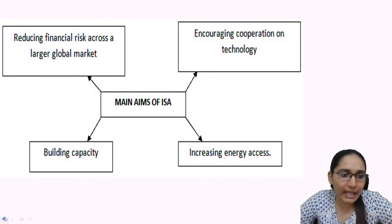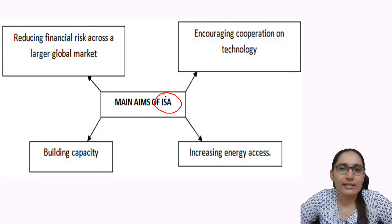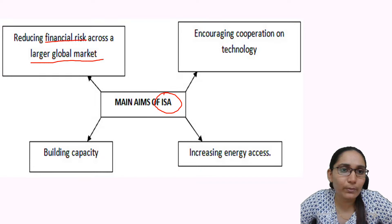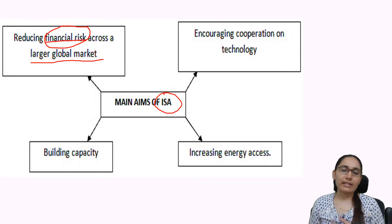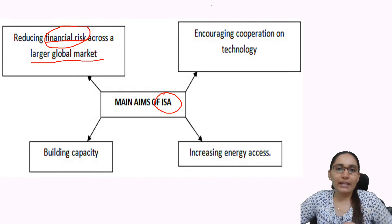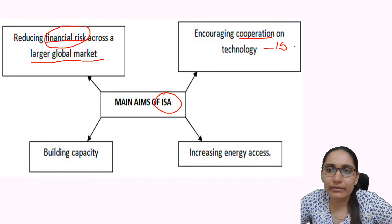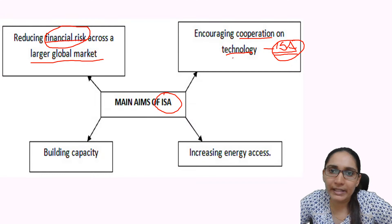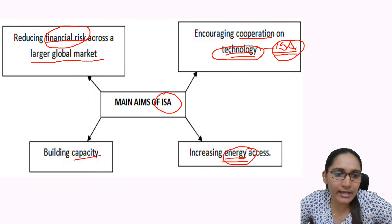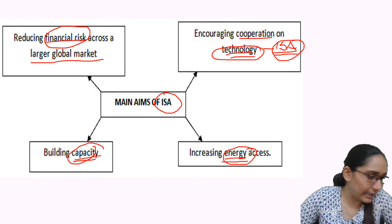The main aims of the International Solar Alliance are: first, reducing the financial risk across a larger global market — because when many countries share the cost, the cost of leveraging solar energy comes down; second, ensuring cooperation on technology so members can share technological know-how; third, increasing energy access; and fourth, building capacity with regard to solar energy leverage.